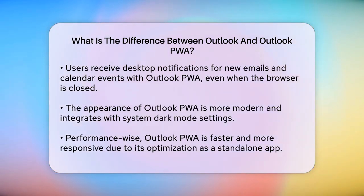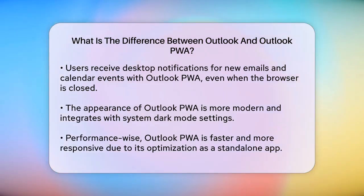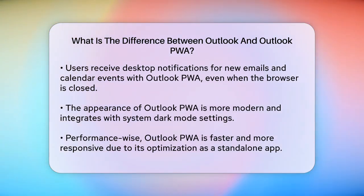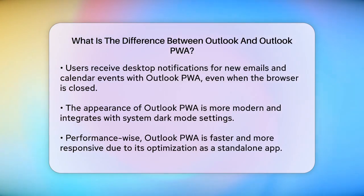In terms of appearance, Outlook PWA has a more modern and app-like look. It uses your system's dark mode settings if you have them enabled, making it look more integrated with your desktop environment. Performance is also a significant difference — Outlook PWA is generally faster and more responsive than the traditional web version, as it's optimized to work as a standalone app, reducing load times and improving overall efficiency.